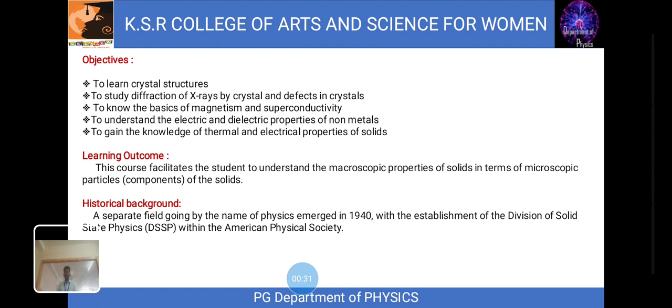Now we'll see the objectives of solid state physics. The first one is to learn crystal structures, to study the diffraction of X-rays by crystal and defects in crystals, to know the basics of magnetism and superconductivity, to understand the electrical and dielectrical properties of non-metals. The last one is to gain the knowledge of thermal and electrical properties of solids.